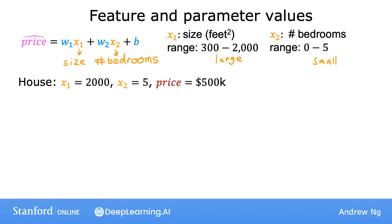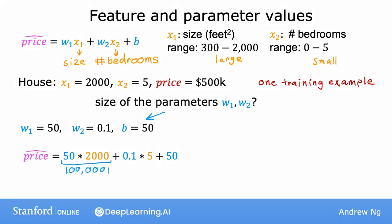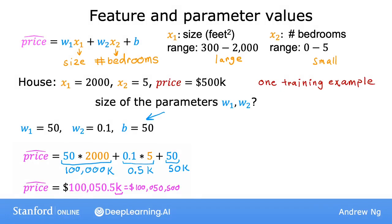Now, let's take an example of a house that has a size of 2,000 square feet, has 5 bedrooms, and a price of $500,000. For this one training example, what are reasonable values for the parameters w1 and w2? Say w1 is 50, w2 is 0.1, and b is 50. In this case, the estimated price in thousands of dollars is 100,000k plus 0.5k plus 50k, which is slightly over $100 million. That's clearly very far from the actual price of $500,000, so this is not a very good set of parameter choices.